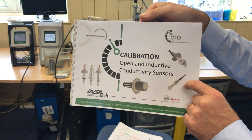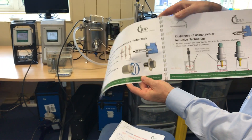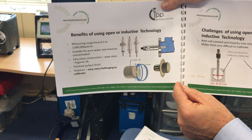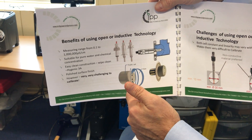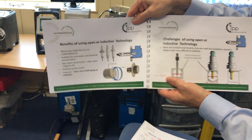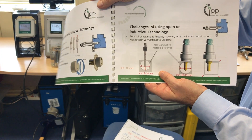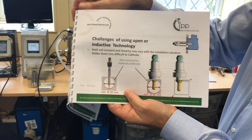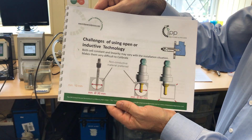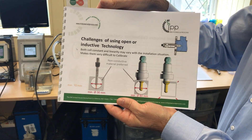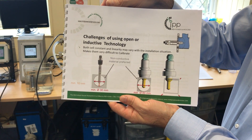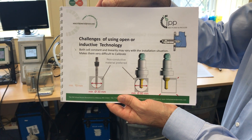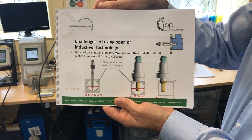These sensors are particularly influenced by their installation. They have an open field measurement, and how they're installed or orientated will have a huge influence — as much as 20% on the measurement. We hope to prove that now by showing you how we would use the Instacal conductivity calibrator to calibrate them correctly.